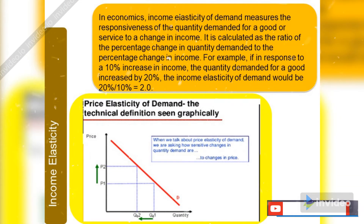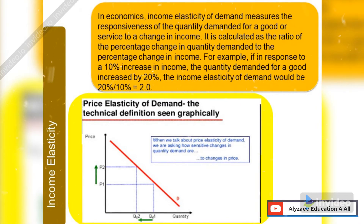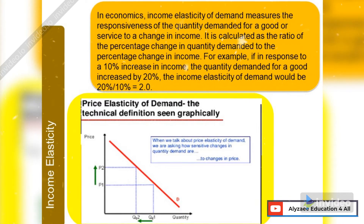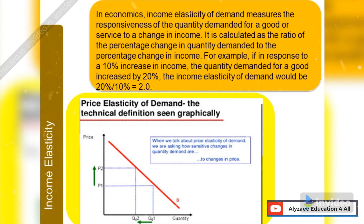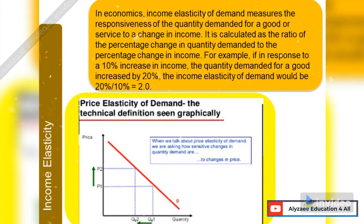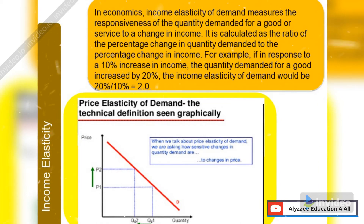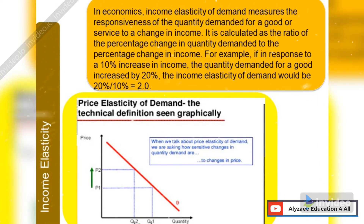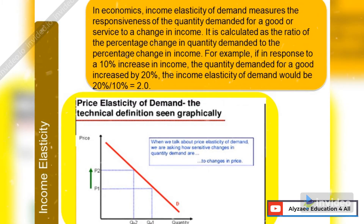In economics, income elasticity of demand measures the responsiveness of the quantity demanded for a good or service to a change in income. It is calculated as the ratio of the percentage change in quantity demanded to the percentage change in income. For example, if in response to a ten percent increase in income, quantity demanded increases by twenty percent, income elasticity would be twenty percent divided by ten percent.